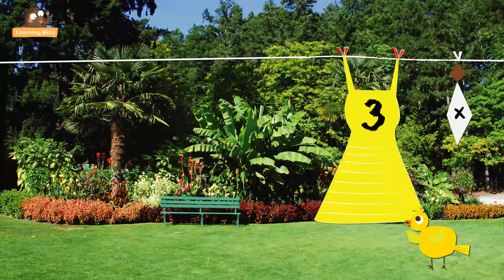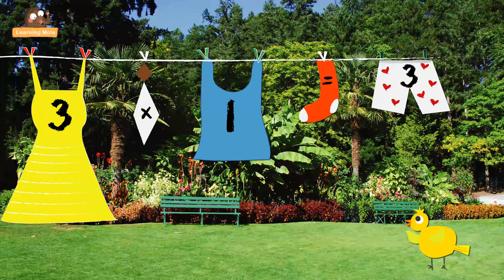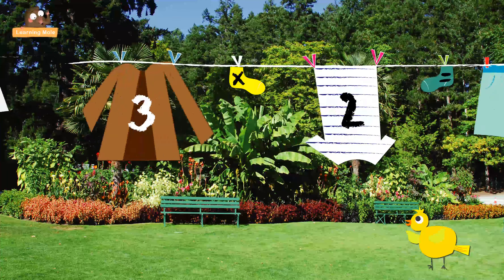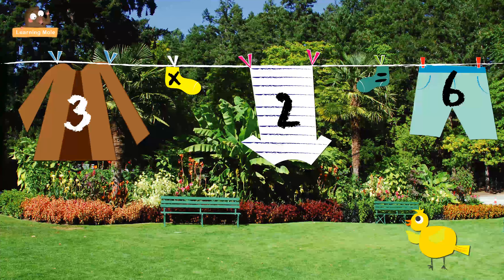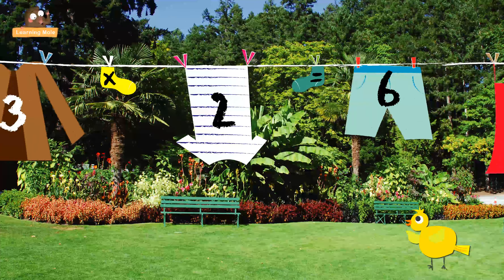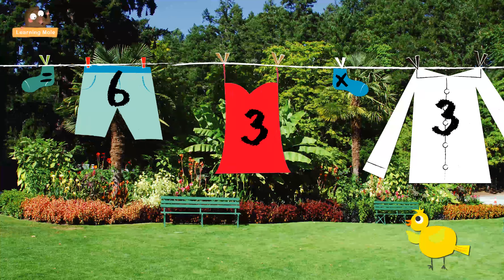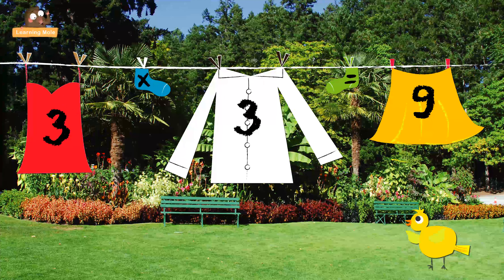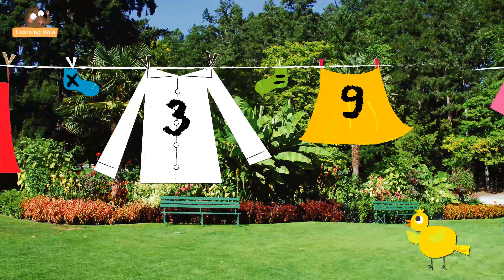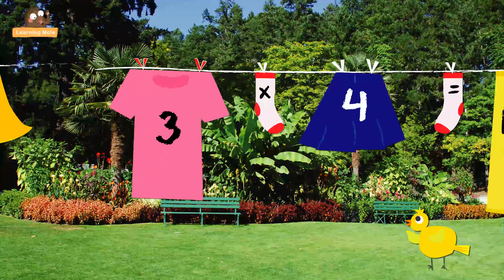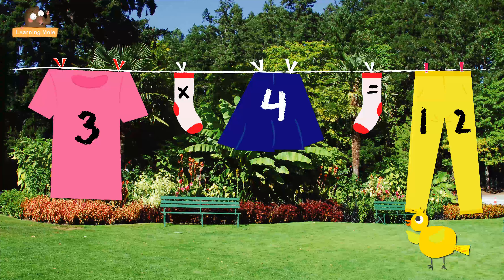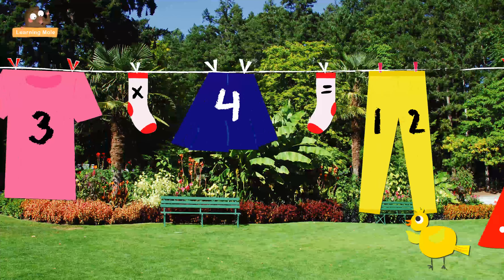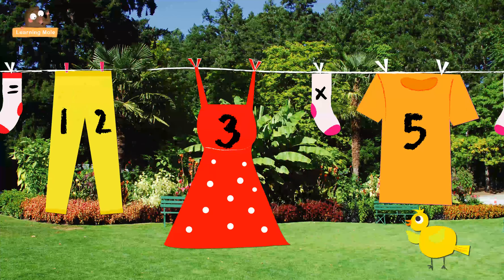Three times one equals three. Three times two equals six. Three times three equals nine. Three times four equals twelve. Three times five equals fifteen.